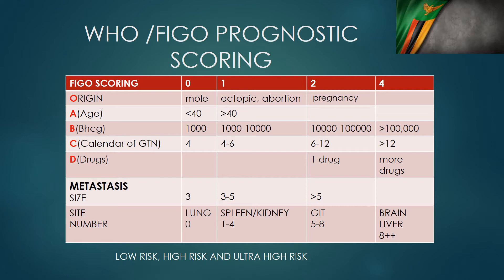The second parameter, A, is Age. If the patient is less than 40 she scores zero; if greater than 40 she scores one. Parameter B is the serum beta-hCG level: less than 1,000 scores zero; between 1,000 and 10,000 scores one; between 10,000 and 100,000 scores two; above 100,000 scores four. Importantly, the scoring only uses 0, 1, 2, and 4 — there is no score of three.